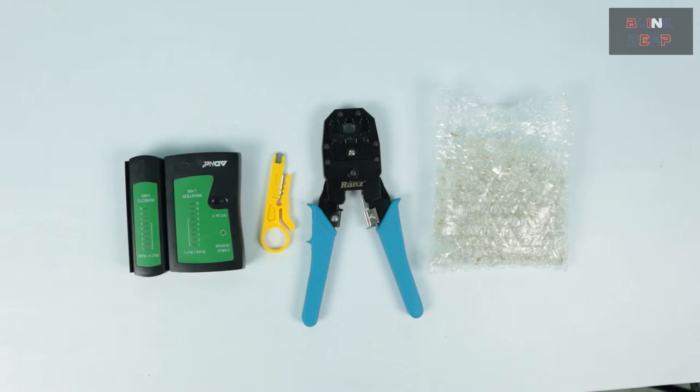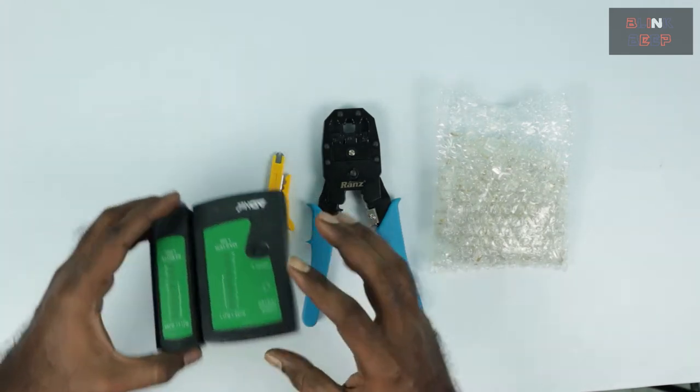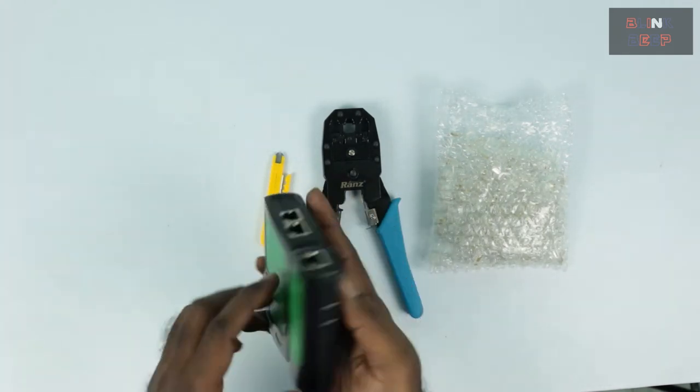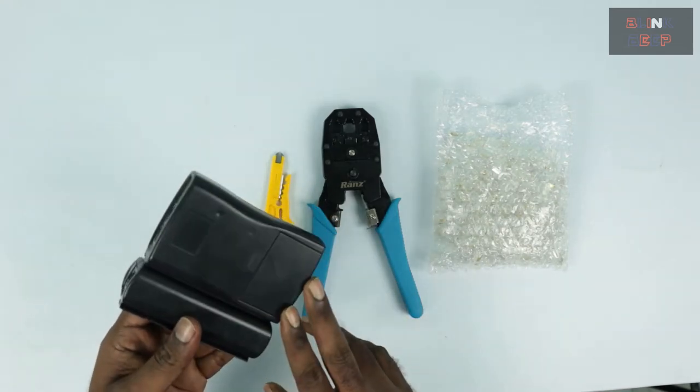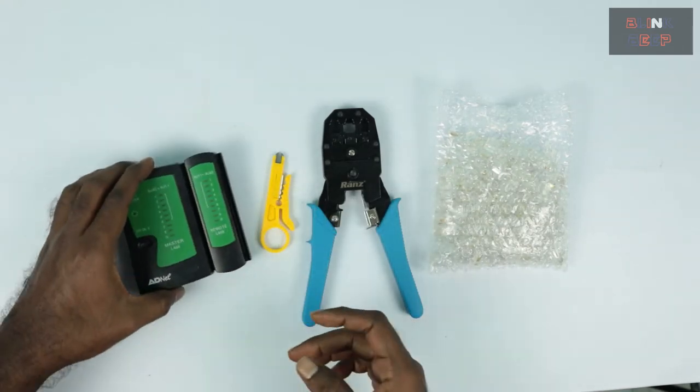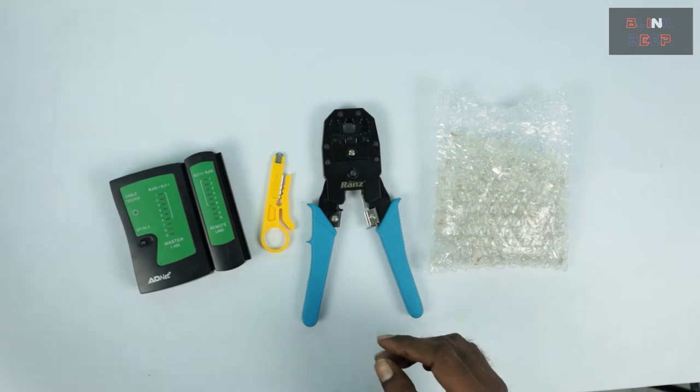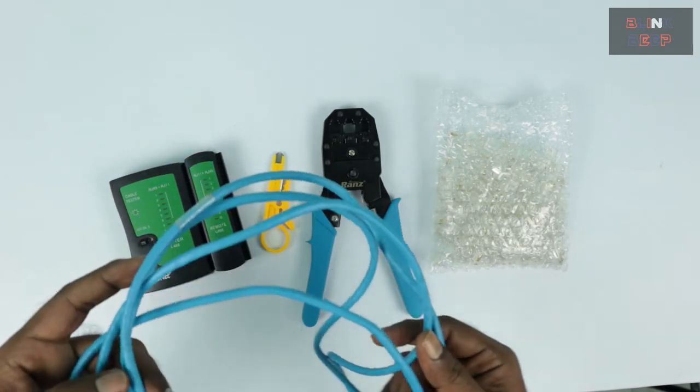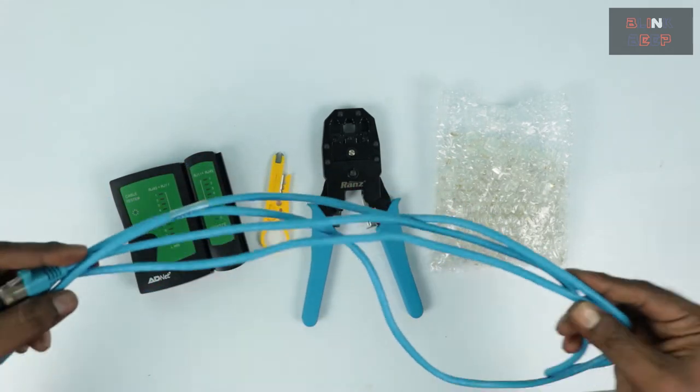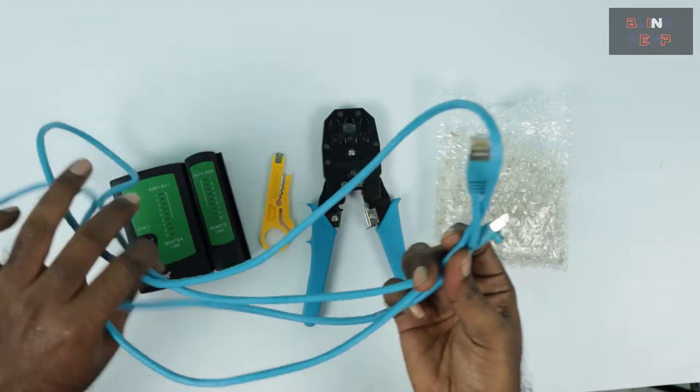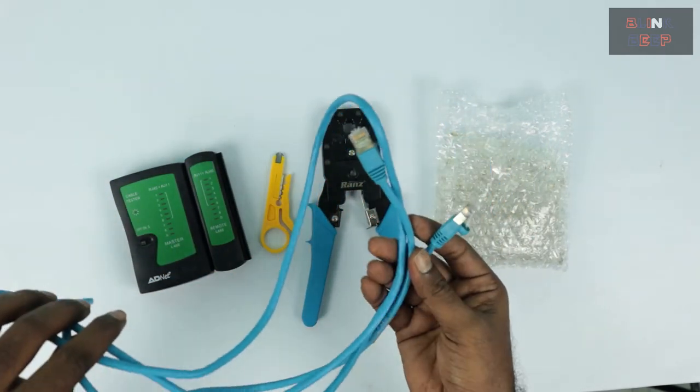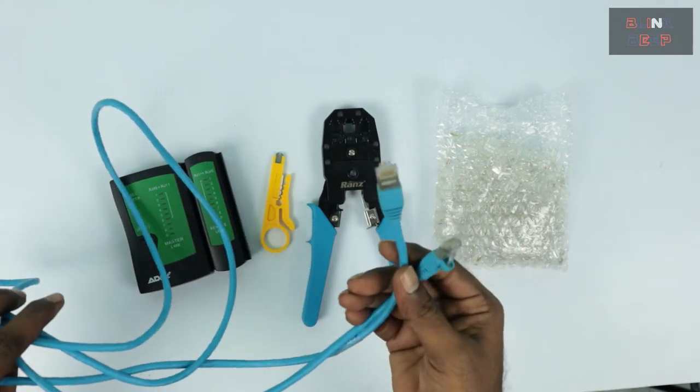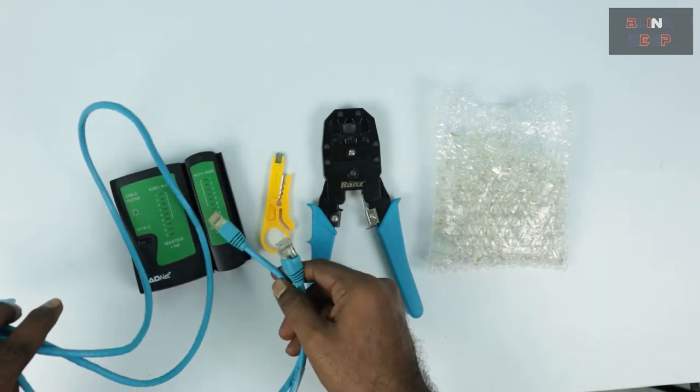Alright, so we will start with the testing tool. I will show you how to use this. As we saw already, it comes with an inbuilt battery and to test it we should use a cable that is already working and proven. This is a cat6 cable that I have been using for a long time and I will be using this to show you how the tester works.